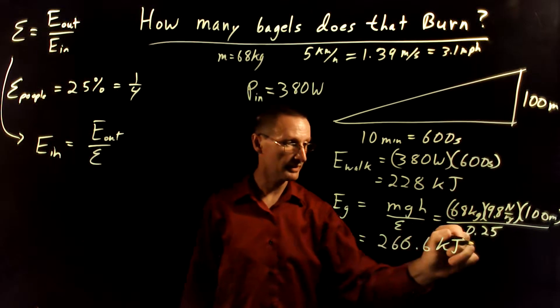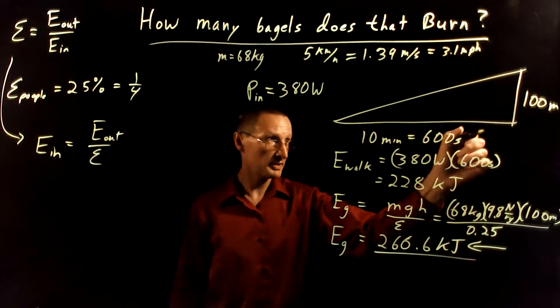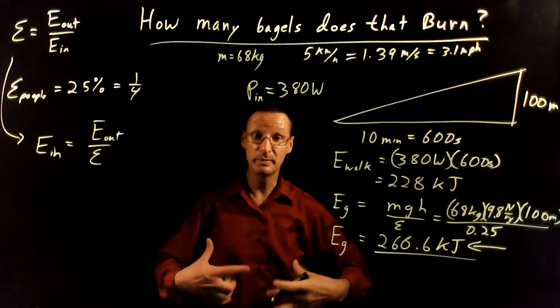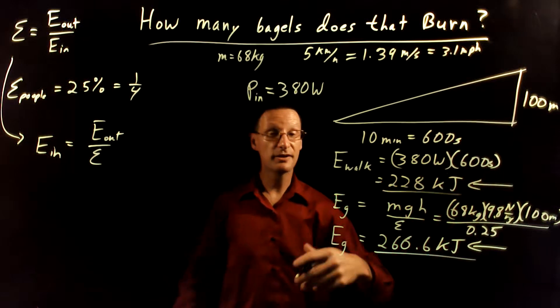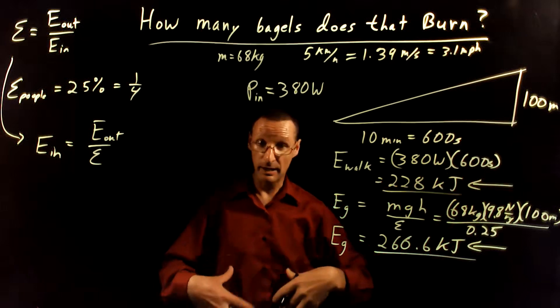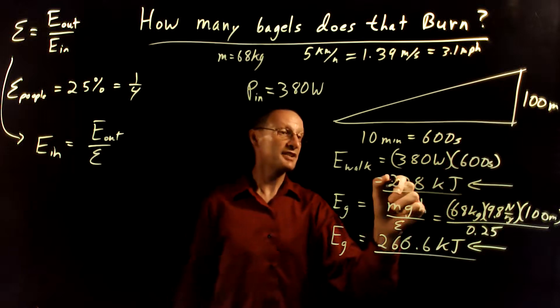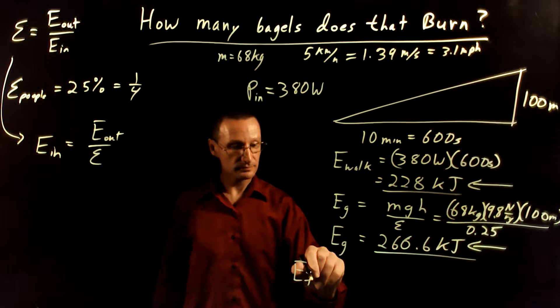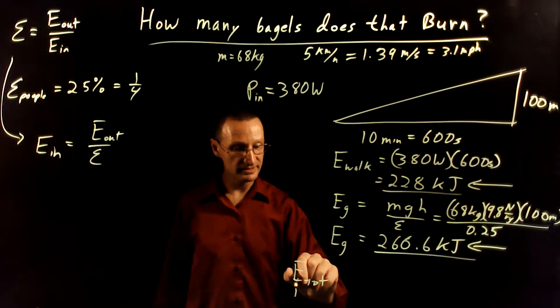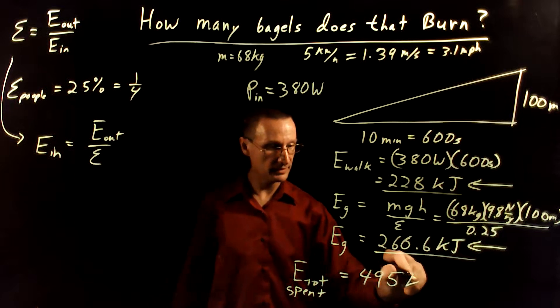I went ahead and computed that ahead of time. So this is the number just from our gravitational potential energy increasing, how much we spend internally to achieve that. And this number here is the amount of energy we spend internally, how many joules we burn internally just by walking. And so if we add these together, the total spent internally is going to be about 495 kilojoules.